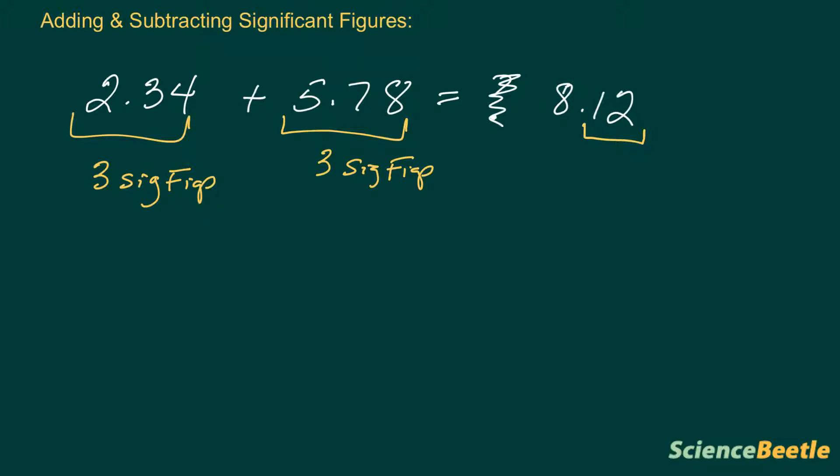That level of measurement is what we want to make sure that we maintain. And so, in this particular example, our answer is going to be 8.12. And this particular answer here is going to be the one that we want for the final answer.